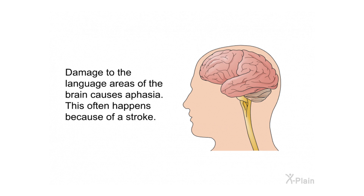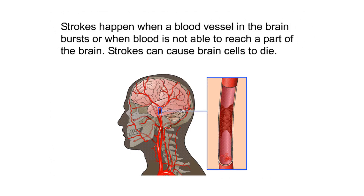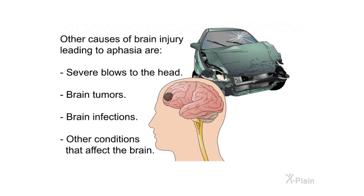Damage to the language areas of the brain causes aphasia. This often happens because of a stroke. Strokes happen when a blood vessel in the brain bursts or when blood is not able to reach a part of the brain. Strokes can cause brain cells to die. Other causes of brain injury leading to aphasia are severe blows to the head, brain tumors, brain infections, and other conditions that affect the brain.